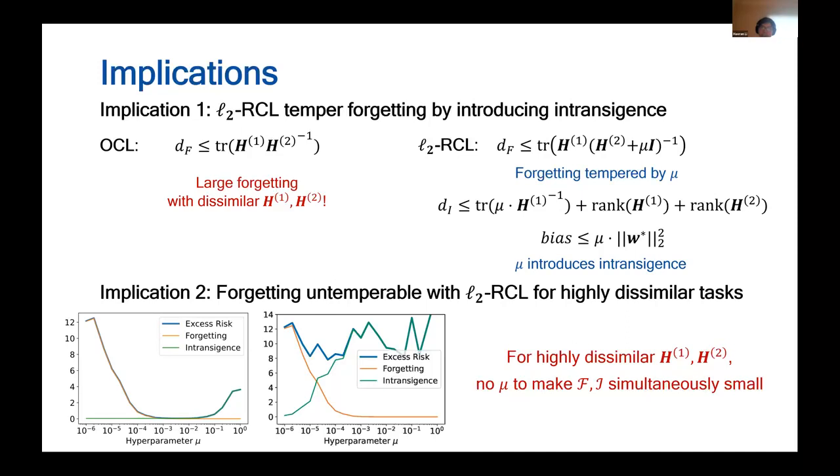By adding the regularization with an increasing parameter mu, the forgetting is decreased while at the cost of increasing intransience on the second task.